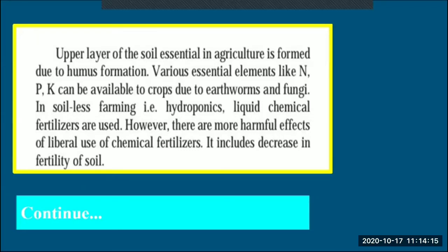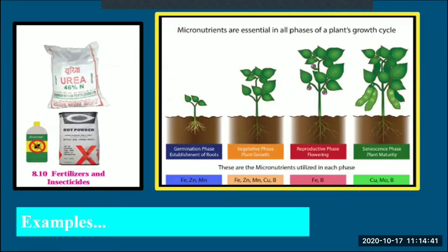Humus is the organic component of the soil, formed by the decomposition of leaves and other plant material by soil microorganisms. Fertilizers help plants grow at each stage: germination phase, vegetative reproductive phase, and senescence phase (plant maturity). Some micronutrients and fertilizers like DDT powder and urea have been used at these stages.